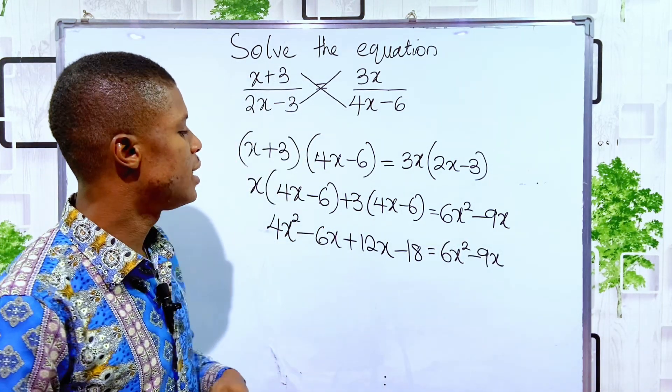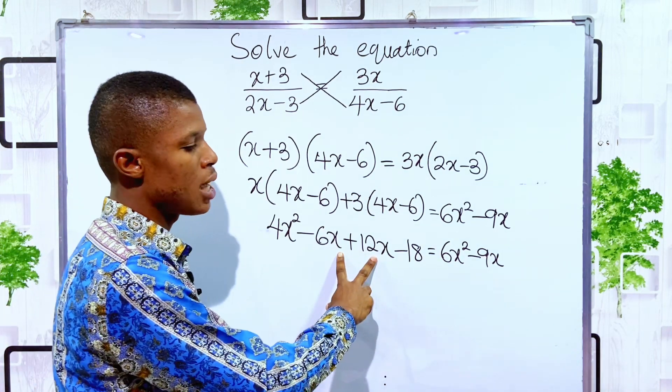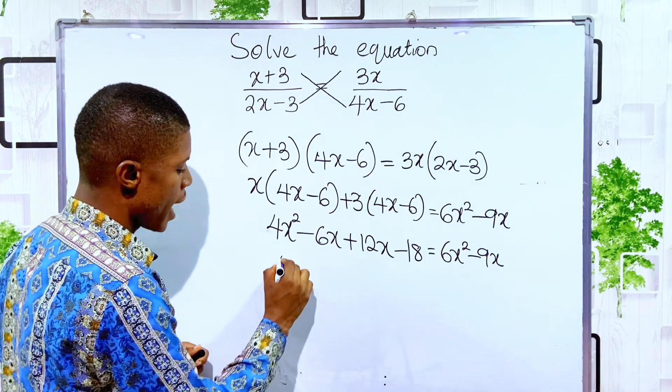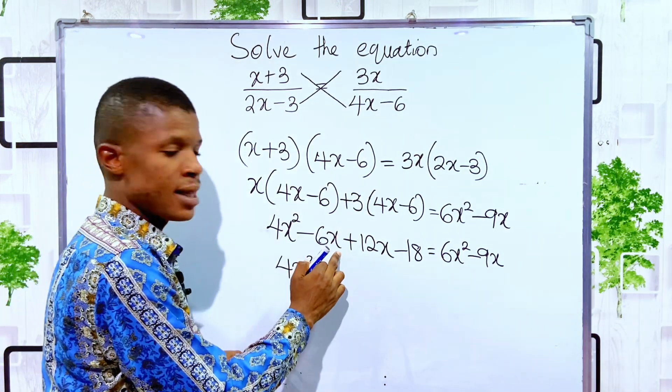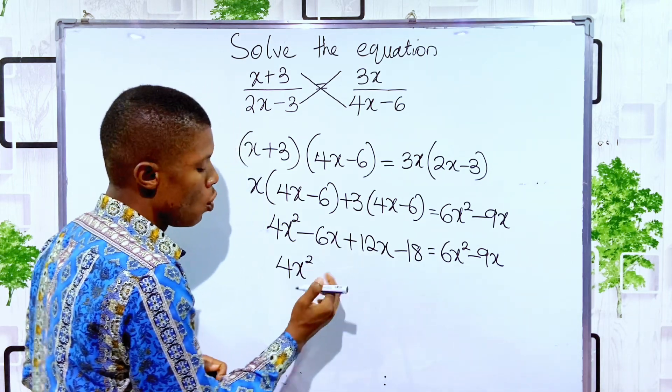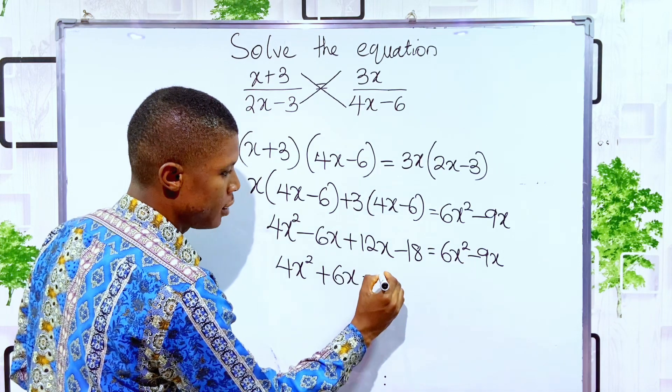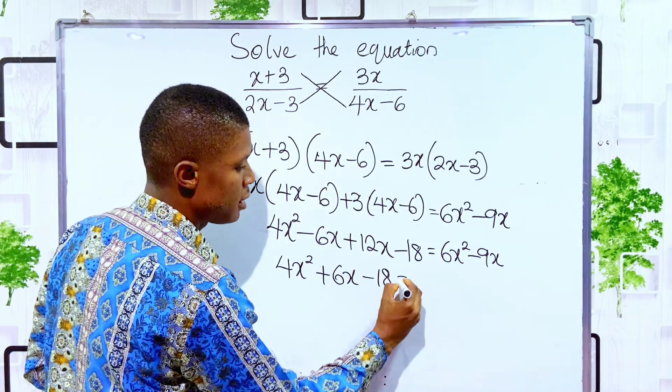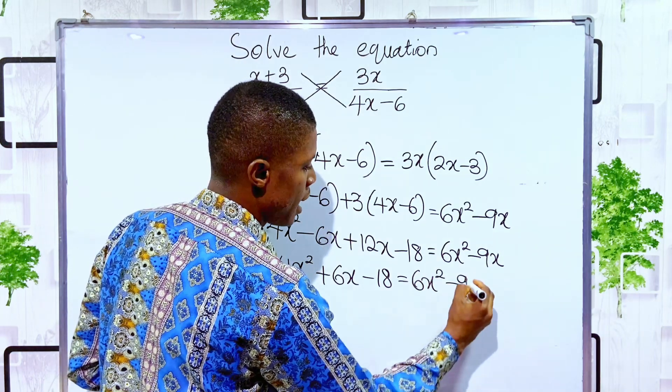Then, the next thing is to collect like terms. You see, these two middle terms are the same. So I can now have 4x squared minus 6x plus 12x will just give you plus 6x minus 18 is equal to 6x squared minus 9x.